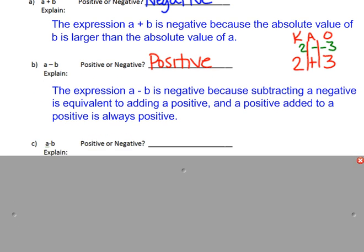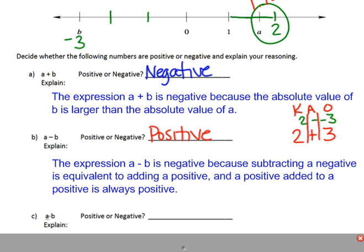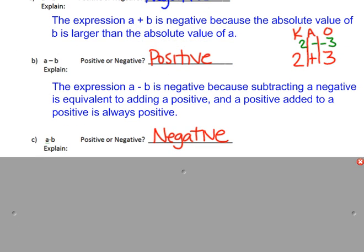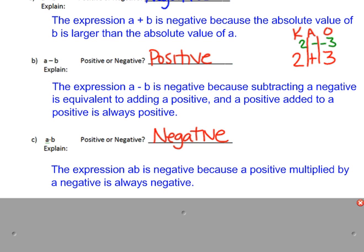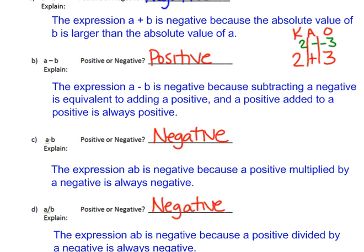For part C, A multiplied by B: A is positive and B is negative. Any time you multiply a positive by a negative, you get a negative product. So the expression AB is negative because a positive multiplied by a negative is always negative. For part D, A divided by B — we're doing a positive divided by a negative, which is also negative for the same reason: a positive divided by a negative is always negative.